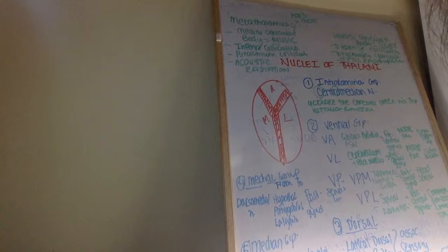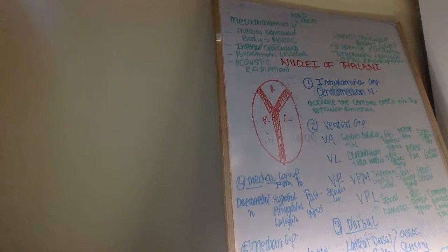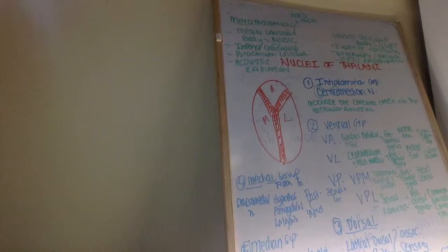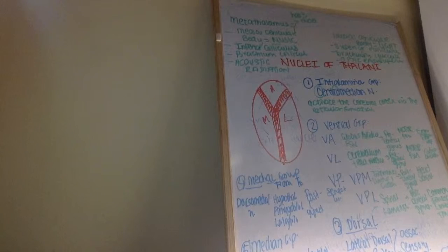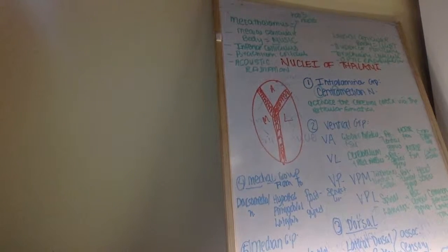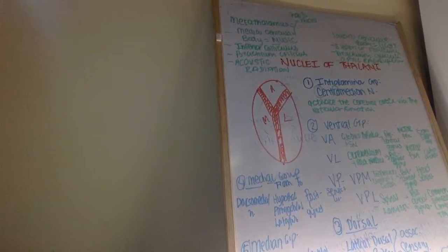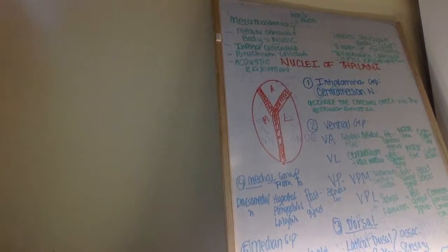I've already drawn out the nuclei of the thalamus to save time because there are quite a few groups. The internal medullary lamina, made up of white matter, divided the gray matter mass of the thalamus into an anterior compartment, medial compartment, and lateral compartment. But what's important to realize is that the main nuclear groups aren't actually as simple as that.